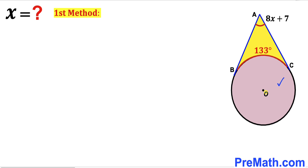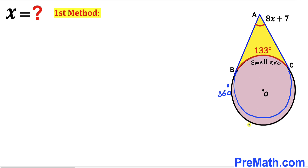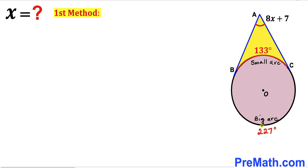Let's focus on the circle with center O and this arc BC. This is our small arc, which is 133 degrees. We know the whole arc of a circle is 360 degrees, so the big arc on the other side is going to be 360 degrees minus 133 degrees, which gives us 227 degrees.